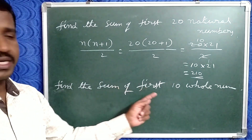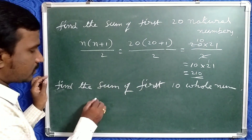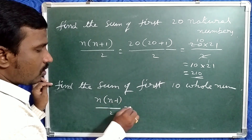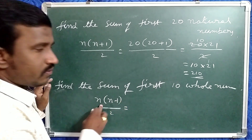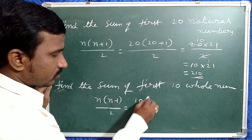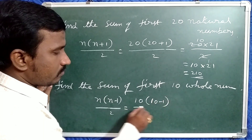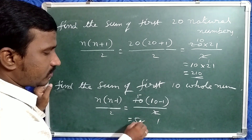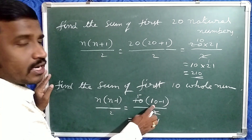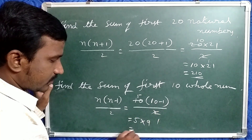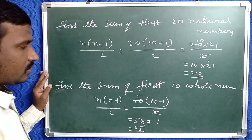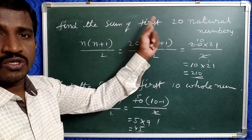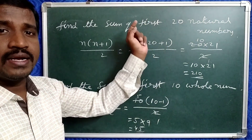Suppose given: find the sum of first 10 whole numbers. Whole numbers formula is n(n−1)/2. Write 10 instead of n: 10 into (10−1) divided by 2. Cancel 2 with 10, giving 5 into (10−1) = 5 into 9. So 9 fives are 45. That is the sum of first 10 whole numbers.